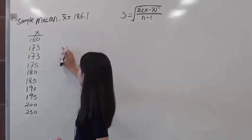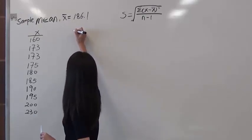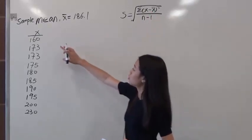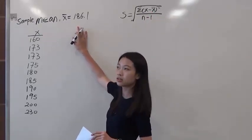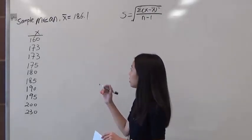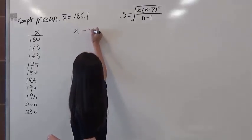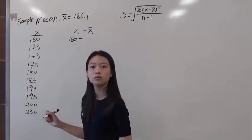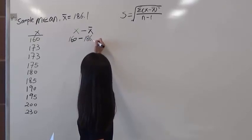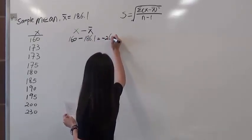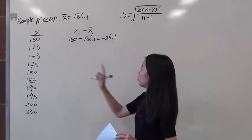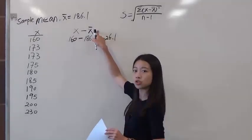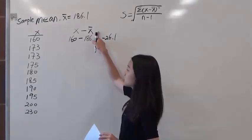In here, we start working on the first sample. We have to find out x minus x̄, which is the number. You have to use the data number minus the sample mean of the data set. So the first case, it's x minus x̄, it's 160 minus 186.1 equals negative 26.1. Following by 173, we still do the same thing because the sample mean will never change, so you just keep using this number to subtract the sample mean.